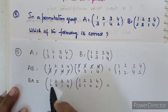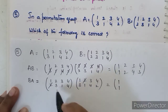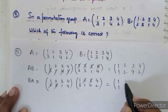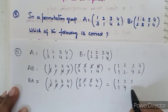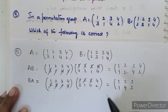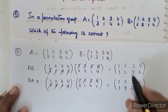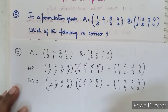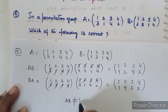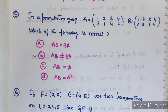Now computing BA: 1→2, 2→1, so 1→1. 2→3, 3→4, so 2→4. 3→1, 1→3, so 3→3. 4→4, 4→2, so 4→2. Therefore BA maps: 1→1, 2→4, 3→3, 4→2. Clearly AB ≠ BA, so option B is correct.